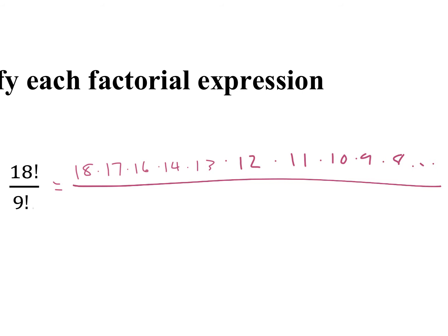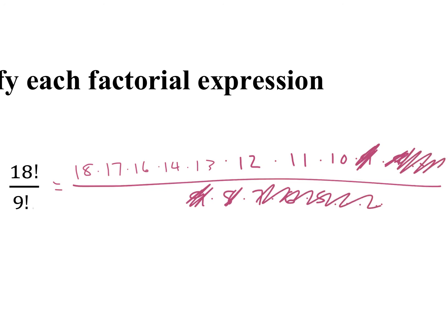Over — 9 factorial is from 9 down, so we have 9 times 8 times 7 times 6 times 5, and so on. You can cancel out numbers on the top if they're the same as numbers on the bottom. So 9 cancels with 9, 8 cancels with 8, 7, 6, 5, 4 all cancel. So on the top, all we're multiplying is 18 times 17 times 16 times 14 times 12 times 11 times 10. I think it is 176 with 8 zeros — so 17 billion.